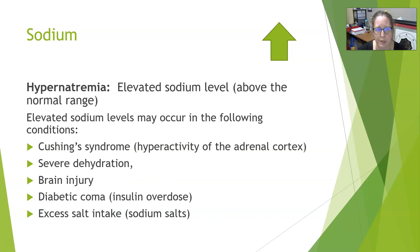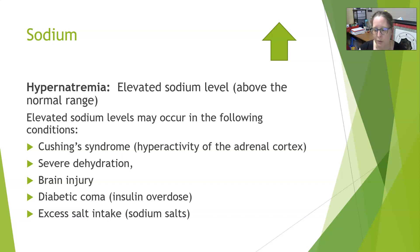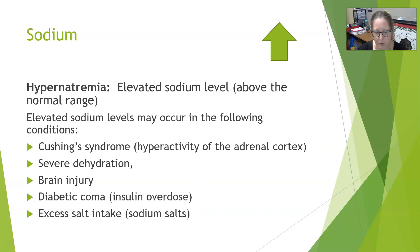Hypernatremia is elevated sodium levels above the normal range in blood. Elevated sodium levels can occur in Cushing's syndrome, which is hyperactivity of the adrenal cortex with high cortisol and high aldosterone levels — the opposite of Addison's — so too much aldosterone removes too much sodium from urine and puts it back into the blood, leading to high sodium levels. Severe dehydration, where there is massive loss of fluid making blood more concentrated, brain injury, and diabetic coma especially in insulin overdose — since insulin drives sodium levels up — can also cause hypernatremia.